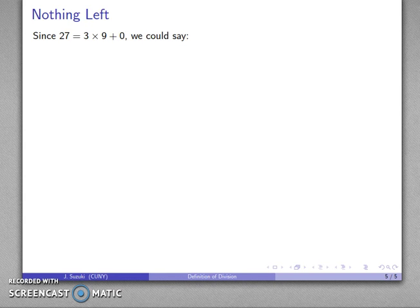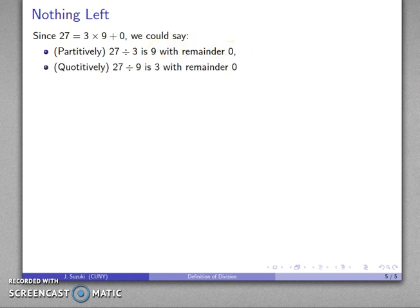On occasion, we may run into the following situation. Let's take a look at something like 27. That's 3 times 9 plus 0. And I can say two things. If I view this partitively, I have 3 sets of 9 apiece with nothing left over. So 27 divided by 3 gives you 9 sets with nothing left over. Or I can look at this quotatively. If I look at it quotatively, with 27, I have 3 sets of 9. So 27 divided into sets of 9 gives you 3 sets, and there's nothing left over.